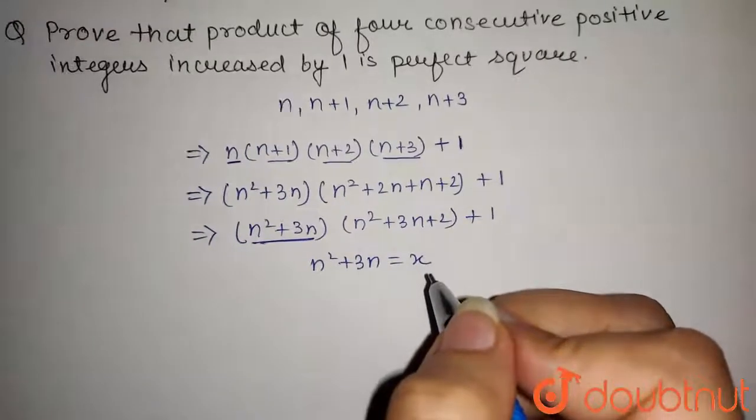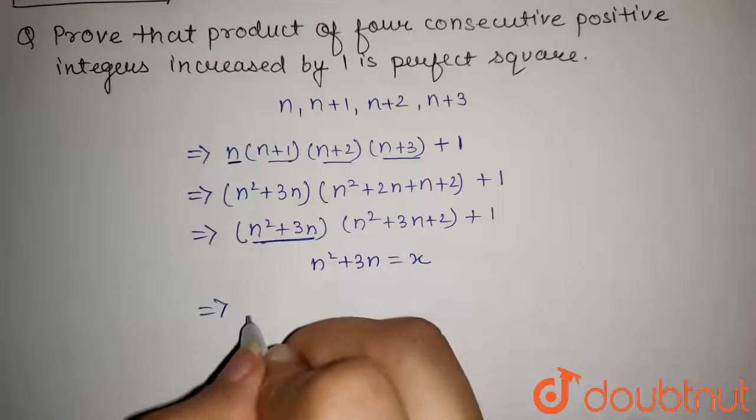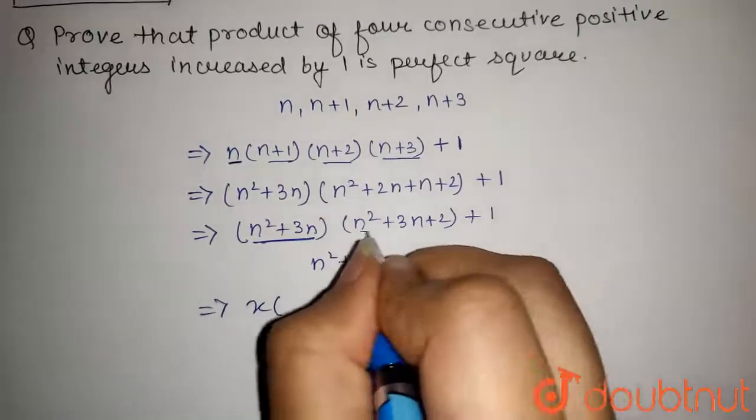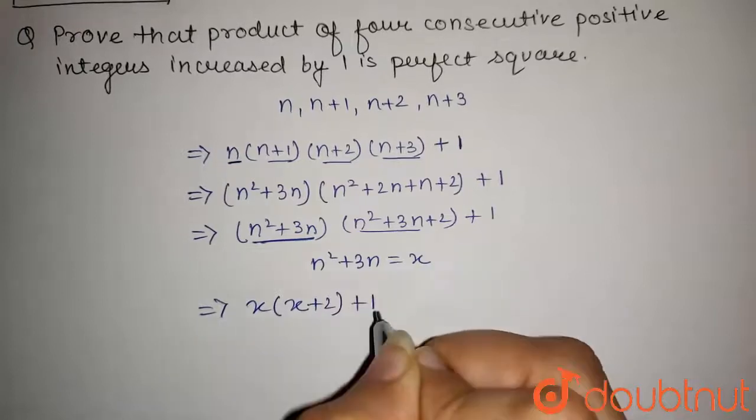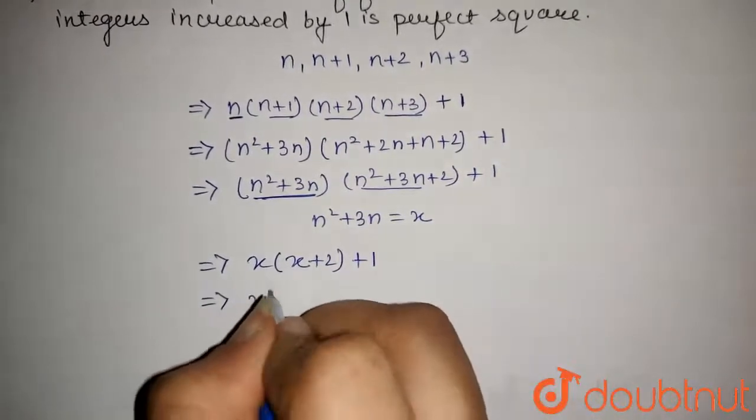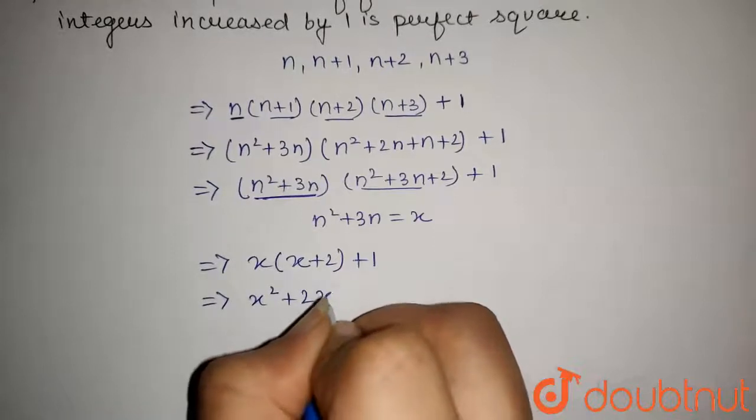Now, substituting this in the above equation, we get x into x plus 2, plus 1. Or, this will be x square plus 2x, plus 1.